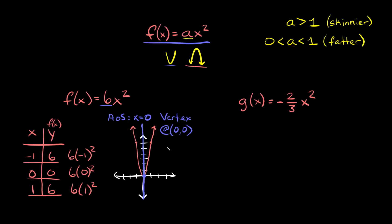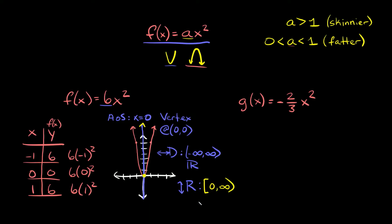The vertex is at 0, 0. The other two things are the domain and range. The domain is always going to be the same for all of these — it's always from negative infinity to positive infinity, or you could write it as all real numbers. The range is the vertical limits. Our lowest point is at 0, so the range goes from 0 all the way to positive infinity — written as [0, ∞). Or you could say y is greater than or equal to 0.